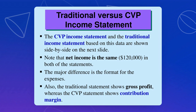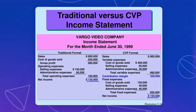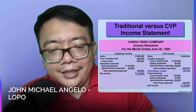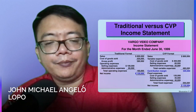In the traditional statement, it shows your gross profit. In the CVP format, you have your contribution margin. The net income is the same whether traditional or CVP format. Please take note: in the CVP format, cost of sales and selling and administrative expenses are classified as variable or fixed. Thank you very much and hope to see you soon when I discuss variable and absorption costing. Thank you and see you all.